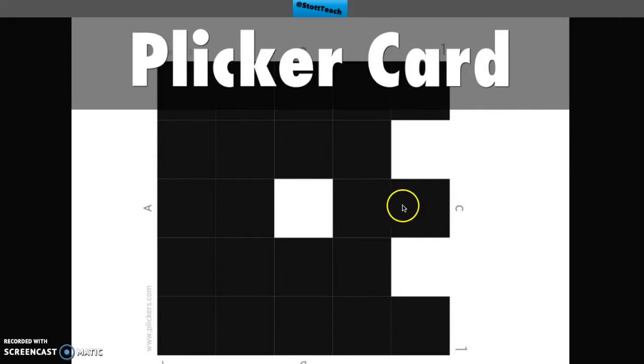Every student will get a Plickers card. On your Plicker card, you can see there's an A, a B up here, a C, and a D.